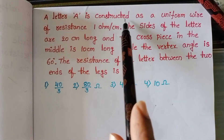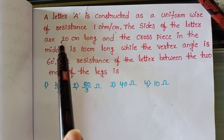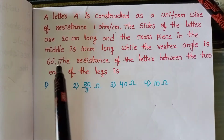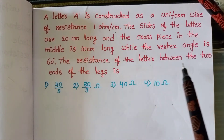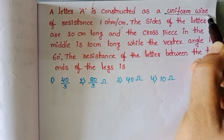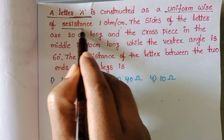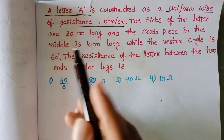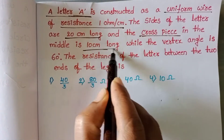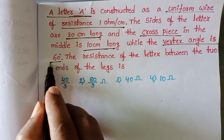A letter A is constructed as a uniform wire of resistance 1 ohm per centimeter. The sides of the letter are 20 centimeters long, the cross piece in the middle is 10 centimeters long, and the vertex angle is 60 degrees. We want to find the resistance of the letter between the two ends of the legs.